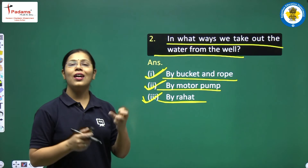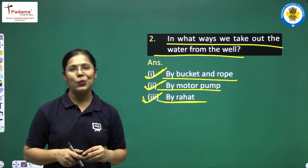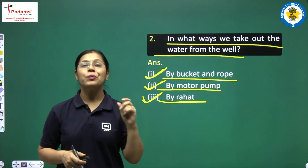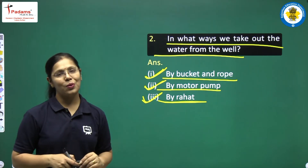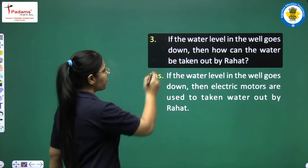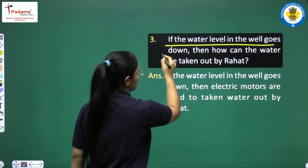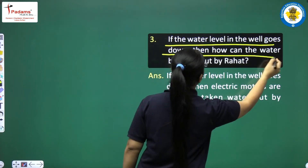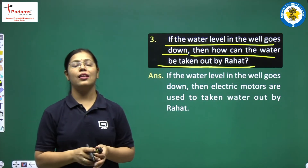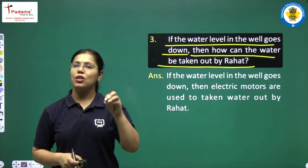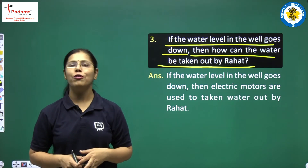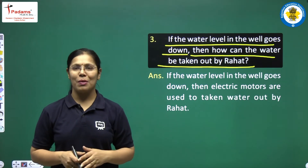The next question is: if the water level in the well goes down very deep, how can water be taken out using a Persian wheel? If we think about the water level in the well going down — so it is very deep now — how can the water be taken out with the help of a Persian wheel? You are being asked about this.